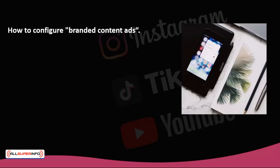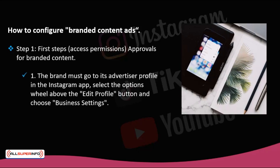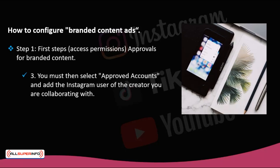How to configure branded content ads. Step 1: Access permissions and approvals for branded content. The brand must grant the creator permission to label the company in its publication. First, the brand must go to its advertiser profile in the Instagram app, select the options above the edit profile button, and choose business settings. If the 'request approvals' option is on, the approved account section will be displayed. Next, select 'approved accounts' and add the Instagram user of the creator you are collaborating with, then select done. When you make a branded content publication and tag the company, you will see the option 'allow trading partner to promote publication,' which permits you to promote your branded organic feed post as an advertisement.